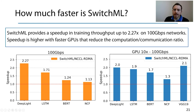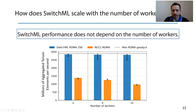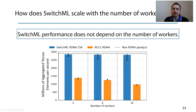We also expect even larger improvements with faster GPUs. We simulated training with a 10x faster GPU and found that for most models, the reduction in computation time leads to even higher speedups. We also measured how SwitchML scales with the number of workers, performing a microbenchmark with 4, 8, and 16 workers. Measuring aggregated elements per second, we saw that SwitchML's performance does not depend on the number of workers, unlike all-reduce approaches such as NCCL.